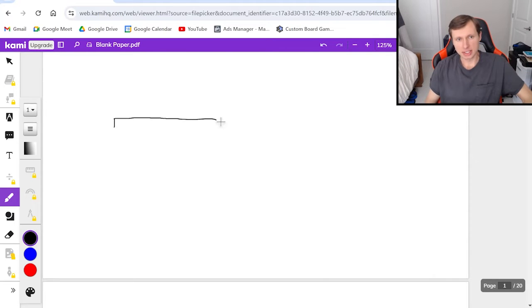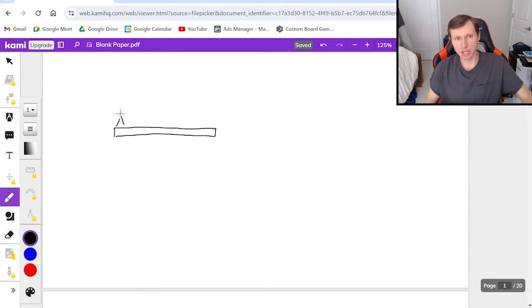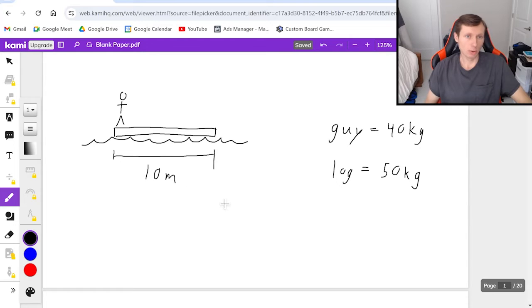So the first problem I have is it's a guy standing on a log and he's standing on one side of the log. And I guess I mentioned this is all happening in water. Let's say the mass of the guy is 40 kilograms and the mass of the log is 50 kilograms. And we'll say the entire log is 10 meters long. Now what we're going to do is we're going to have this guy walk from one end of the log to the other so that now he's standing on the other side.